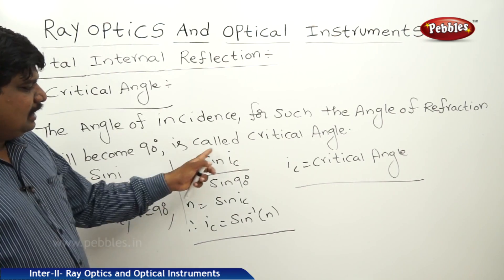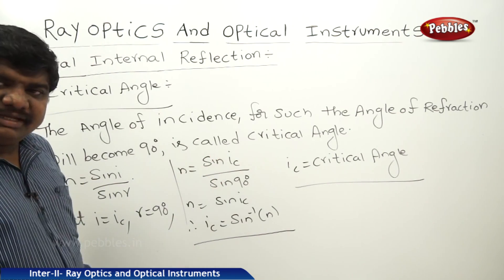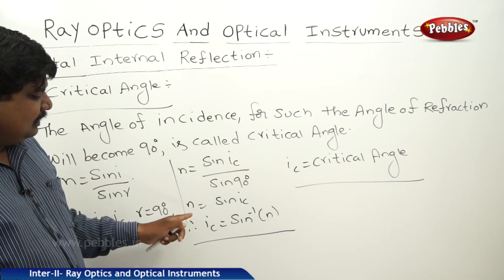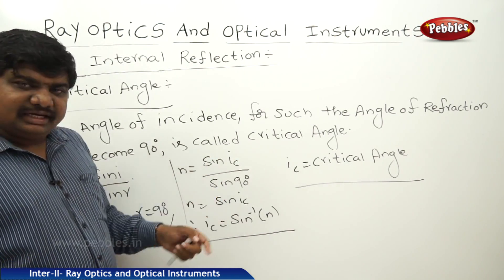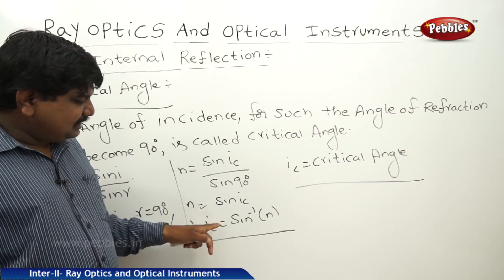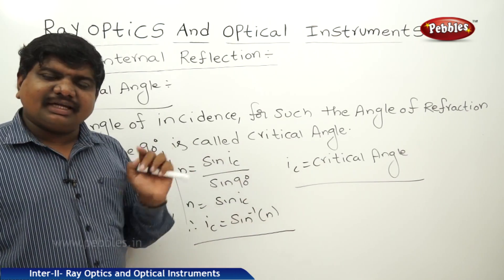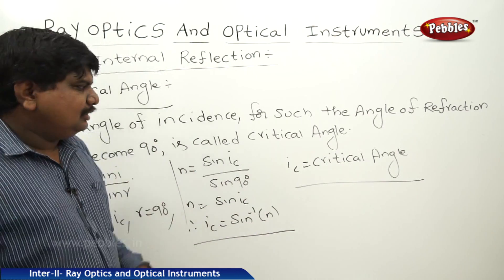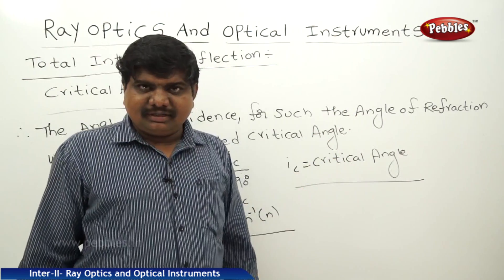Therefore, n equals sine ic by sine 90 equals sine ic. Therefore, ic equals sine inverse of n. So ic is the critical angle, and this critical angle is slightly less than 90 degrees.